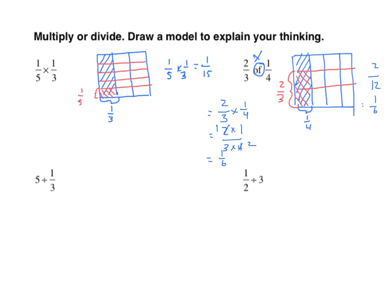Now we'll do some division. The first one has a whole number divided by thirds, so we're going to use more of a tape diagram model. We're going to bracket the whole, which is five, and represent five by partitioning it into five equal parts. Now each one of these parts needs to be cut into thirds. So I'm going to partition each section into thirds.